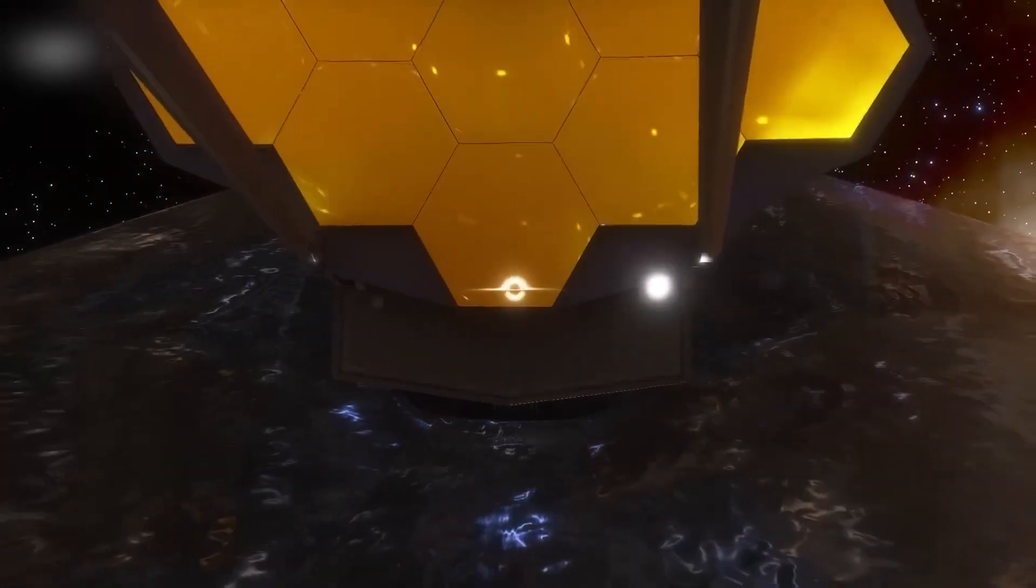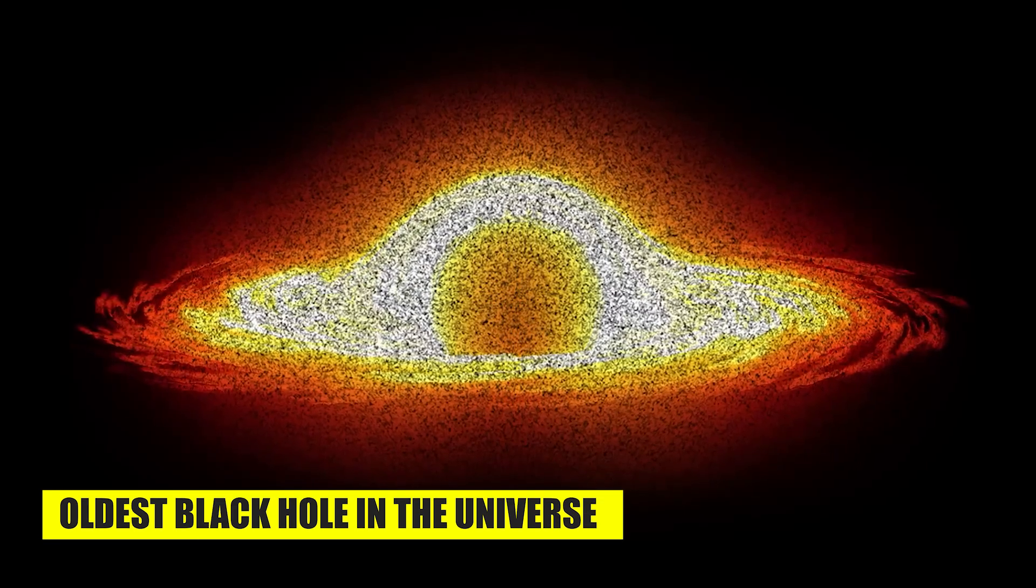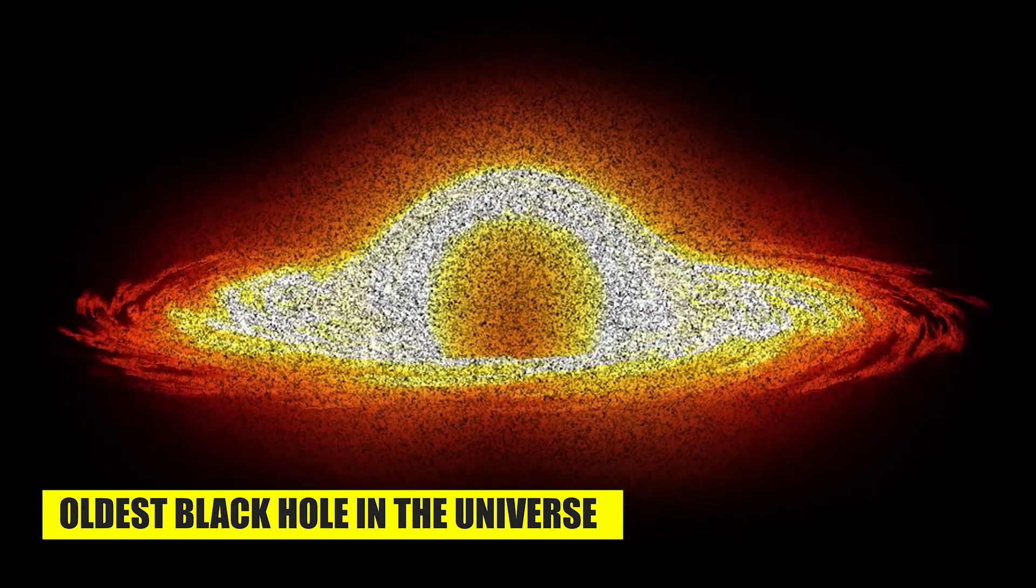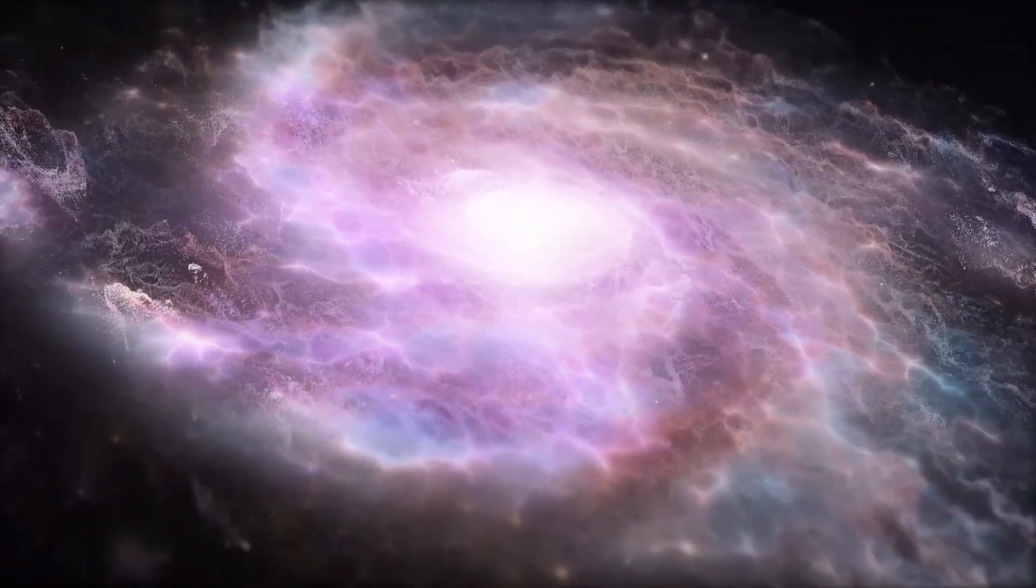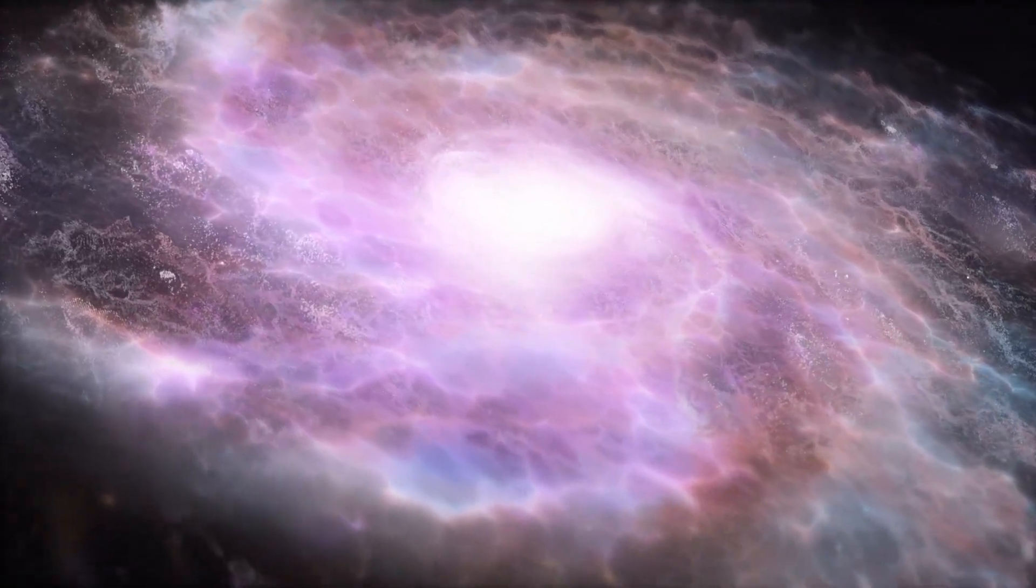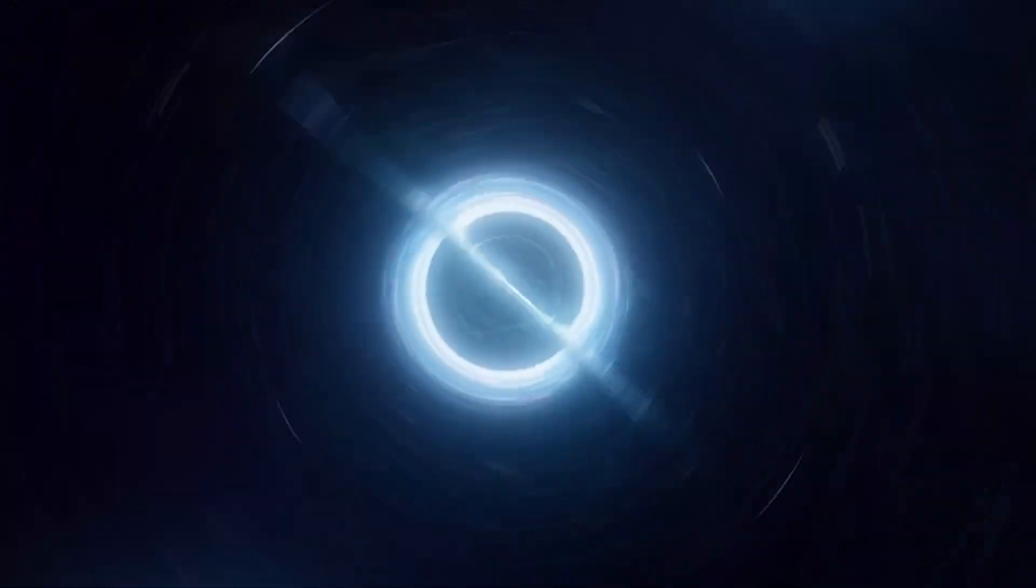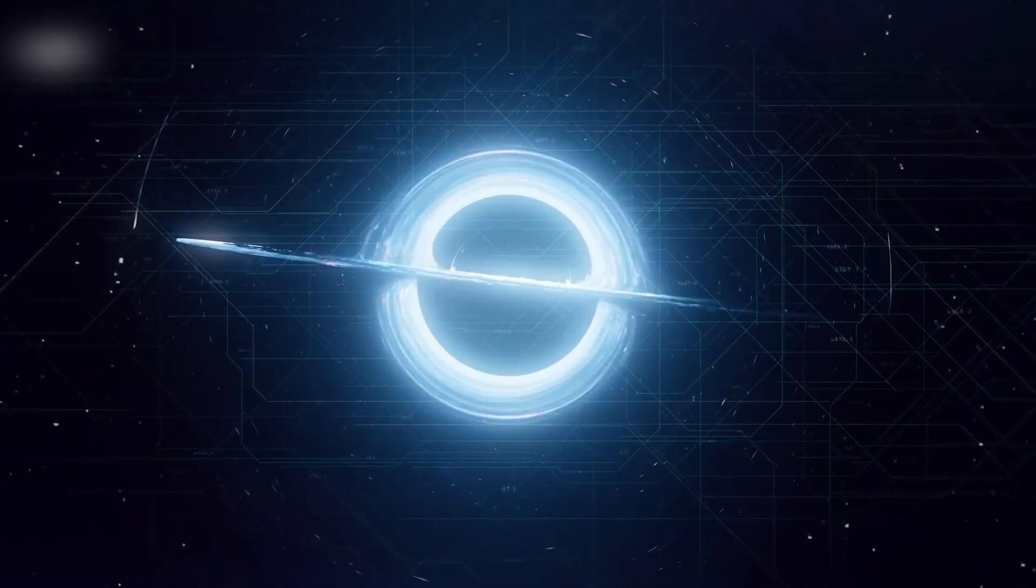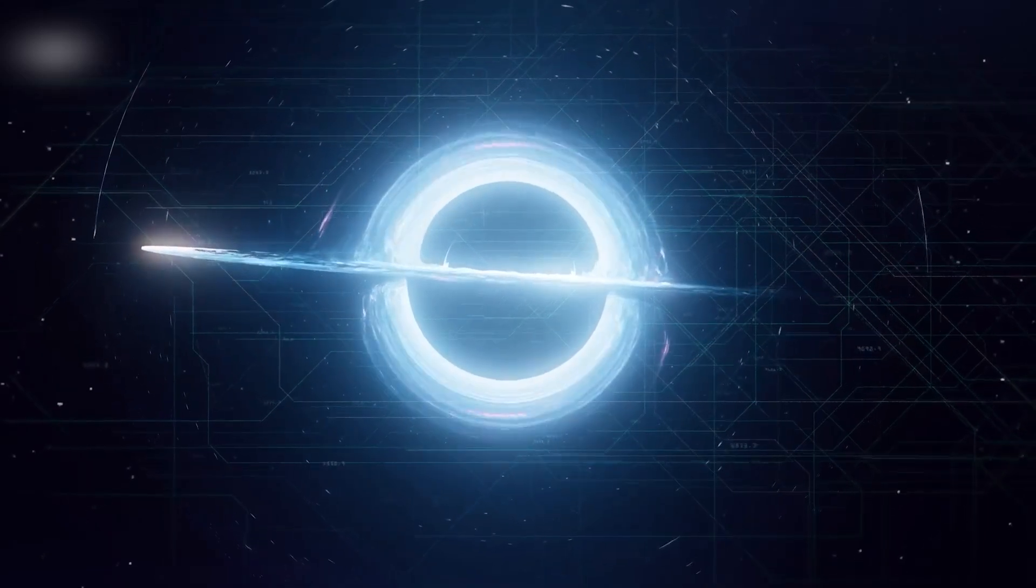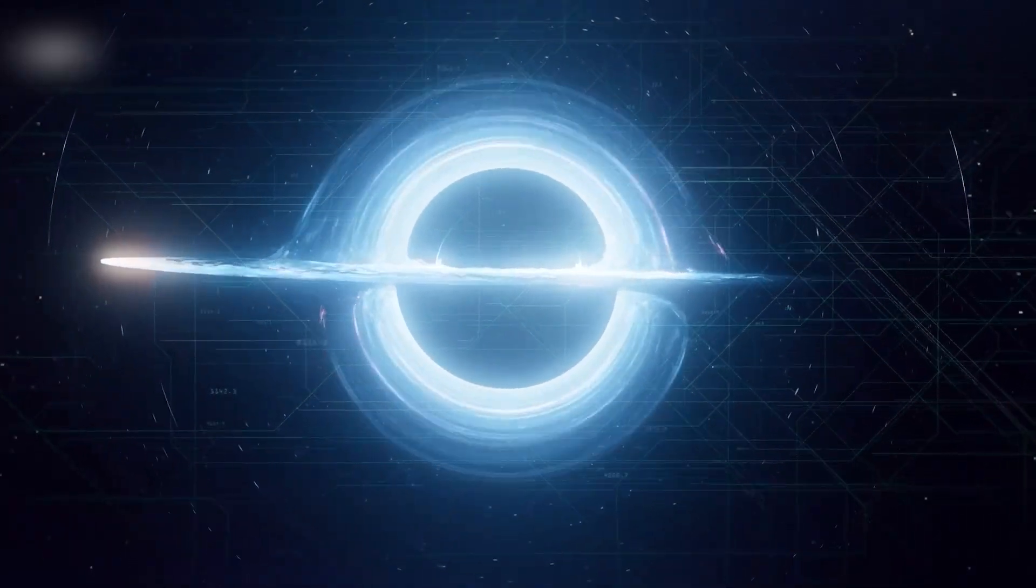Enter the James Webb Space Telescope, with its recent revelation of detecting what could be the oldest black hole in the universe. Situated at the center of a young galaxy, formed just 570 million years post the Big Bang, this colossal entity weighs a staggering 10 million times the mass of our sun, qualifying it as a supermassive black hole.